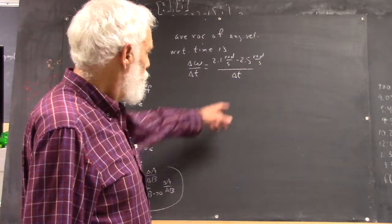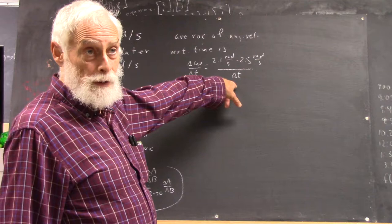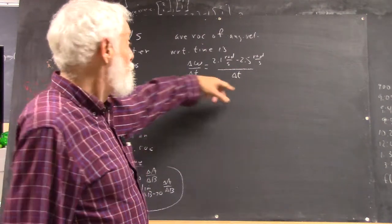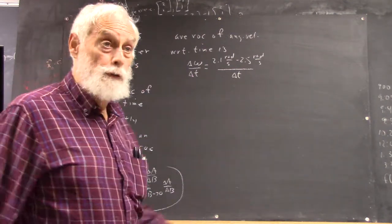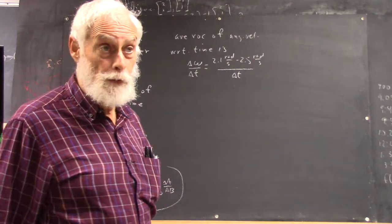And this is, of course, over delta T, not over 2. Very easy, because in a minute we're going to average the two angular velocities and figure out how far the thing went, right?